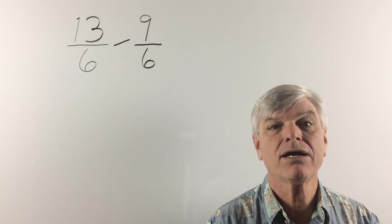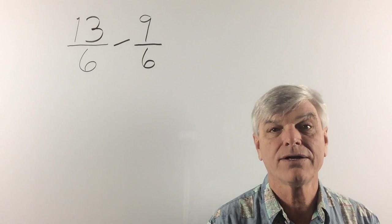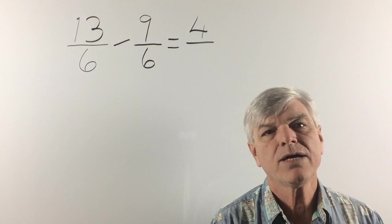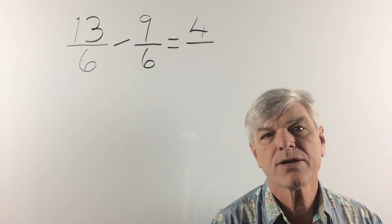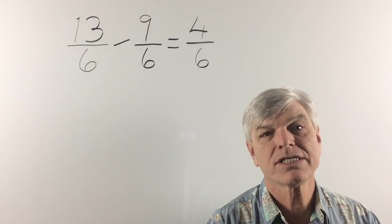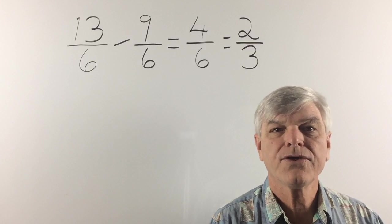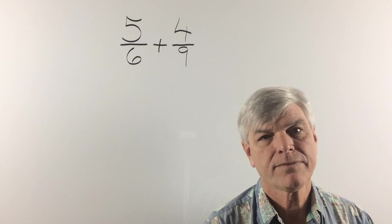So 13 minus 9 equals 4 and the denominator remains the same. We have 4 sixths, which of course we're going to reduce to 2 thirds.